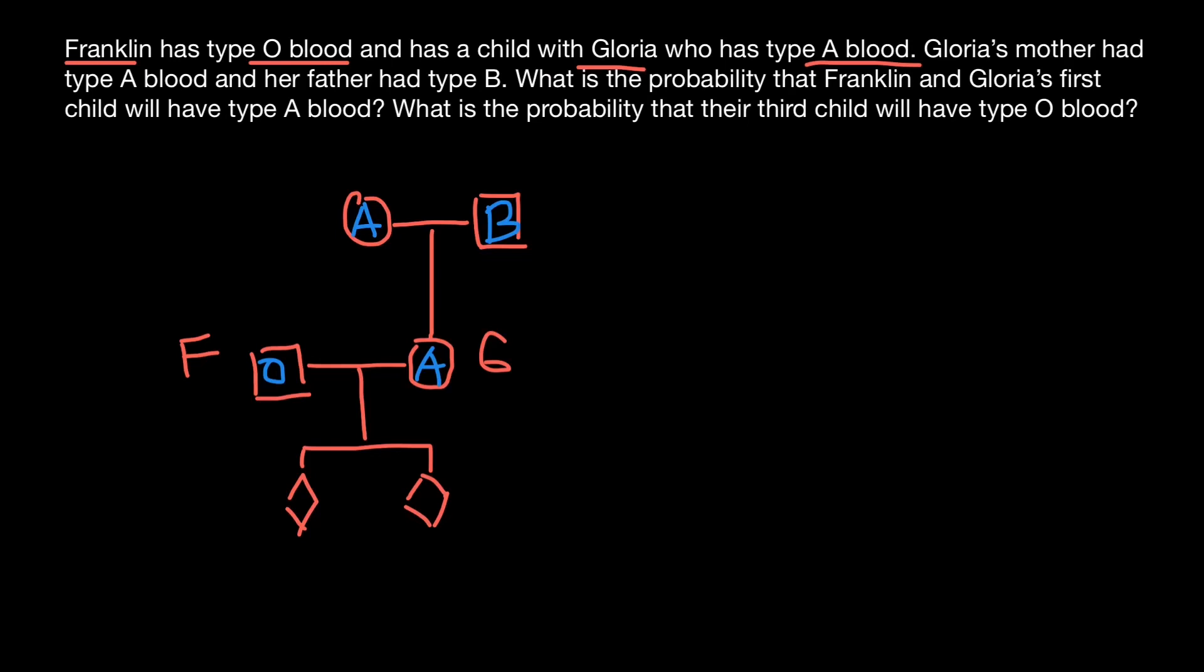Take a look. For example, her mother can be of the genotype AA or can be of the AO. And her father can be also of the genotype BB, O, BO. We know that from the mother's side, she got A allele.